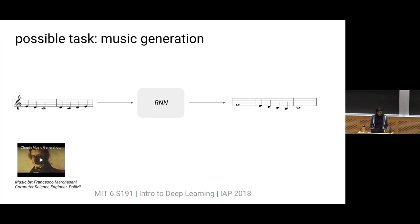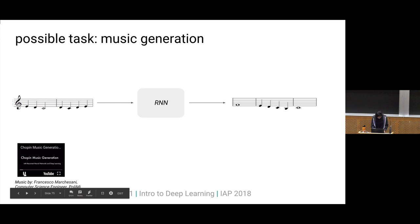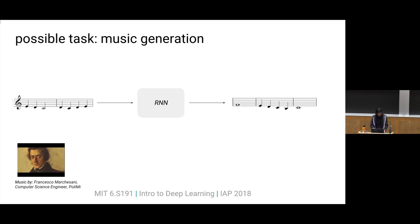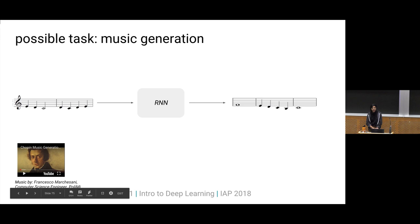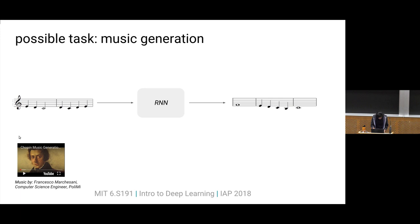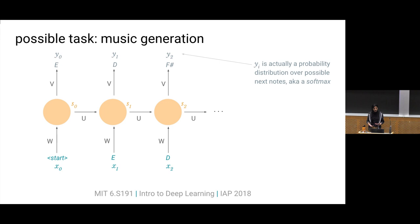The next task would be something like music generation. An RNN can produce music because music is just a sequence, and that's something you're actually going to do in the lab today. The way you would construct a recurrent neural network for this is at every time point taking in a note and producing the most likely next note given the notes seen so far — so here you produce an output at every time step.